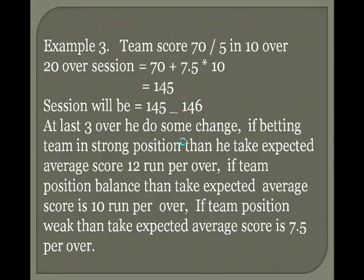At the last 3 overs, he makes some changes. If the batting team is in a strong position, expected average score is 12 runs per over. If team position is balanced, expected average score is 10 runs per over. If team position is weak, expected average score is 7.5 per over for the next 3 overs.